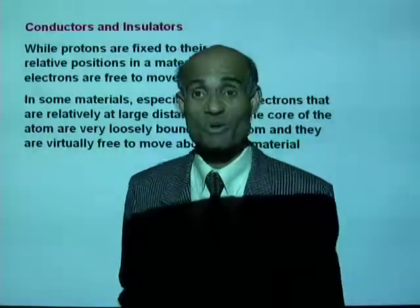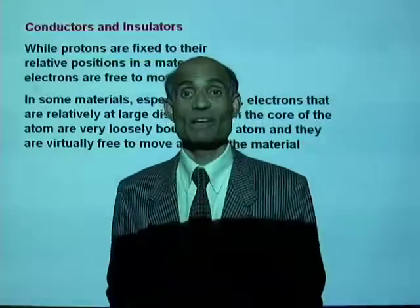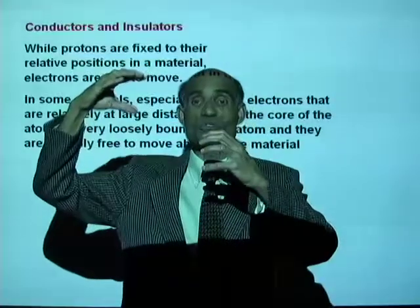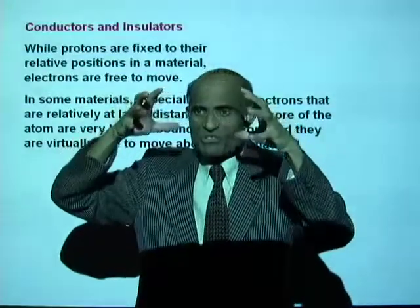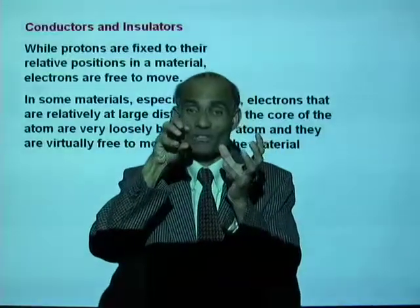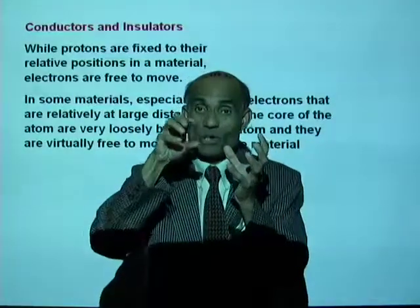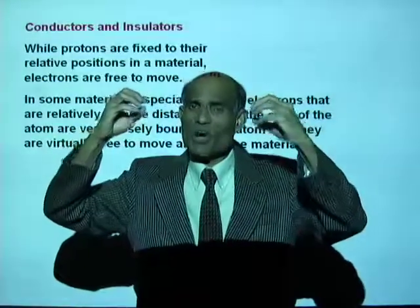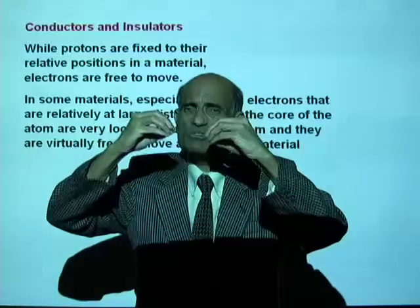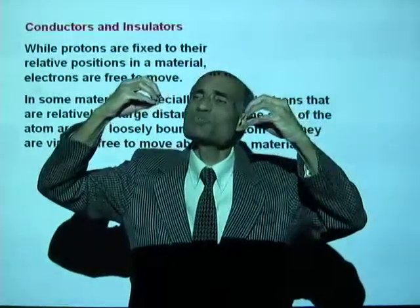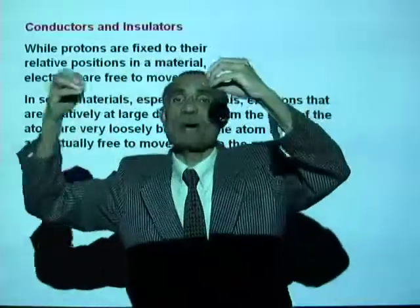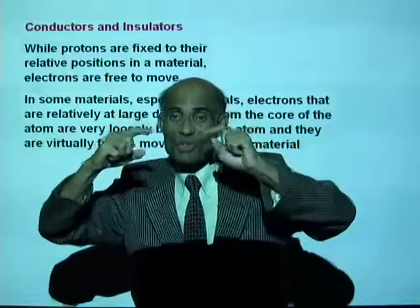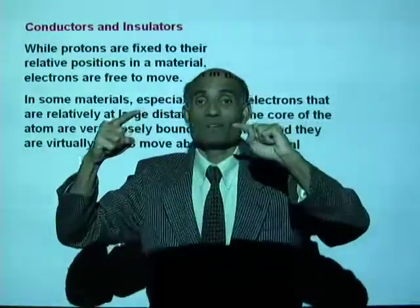In some materials, especially metals, electrons that are relatively farther away from the nucleus exist in a cloud around it. These electrons are not very closely attached to the nucleus, meaning they tend to move from one atom to the other. In a metal, there is a cloud of electrons that can move about freely.